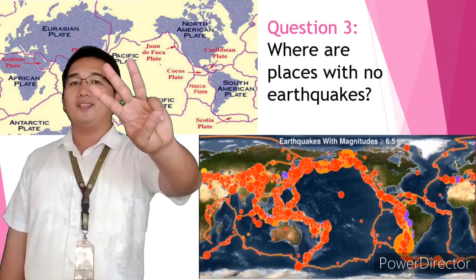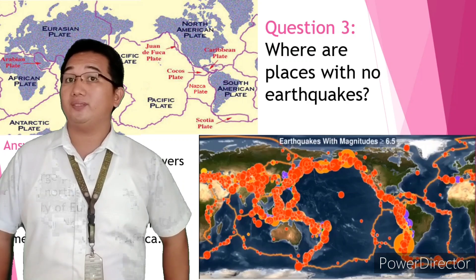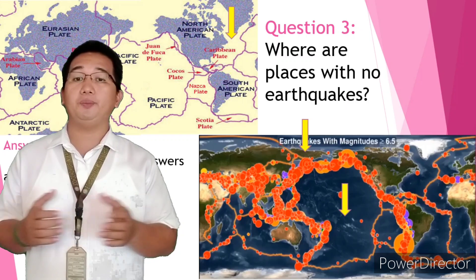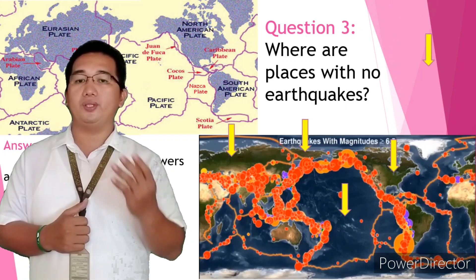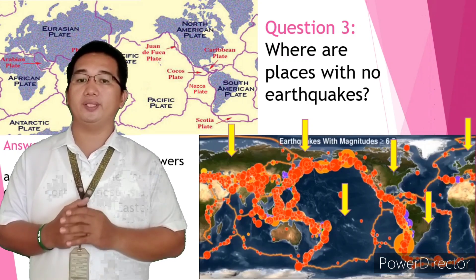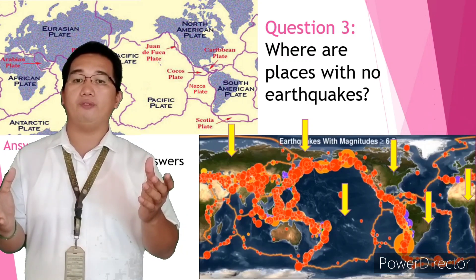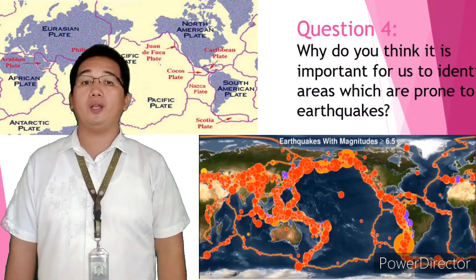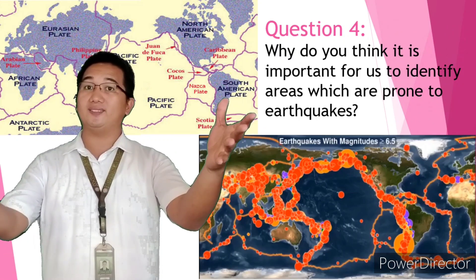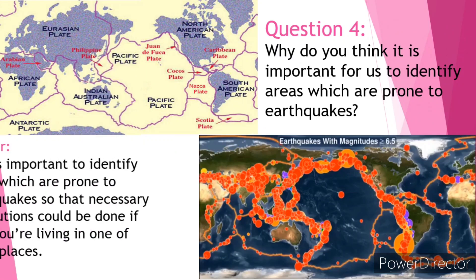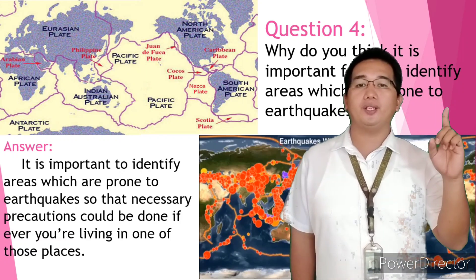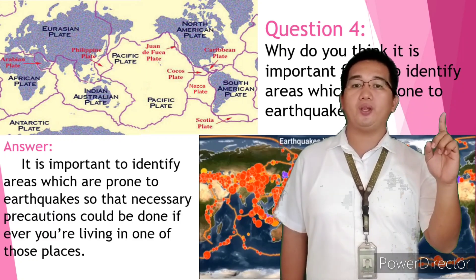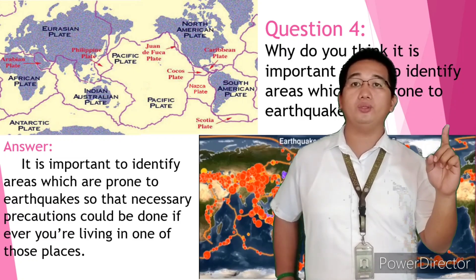Question number three: are there places on Earth where there are no earthquakes? Some possible answers include the large part of the Pacific Ocean, the northernmost Asia, majority of Europe, the eastern portion of North and South America, and western Africa. Question number four: why is it important to identify areas prone to earthquakes? It is very important so that necessary precautions could be taken if you are living in one of those places.